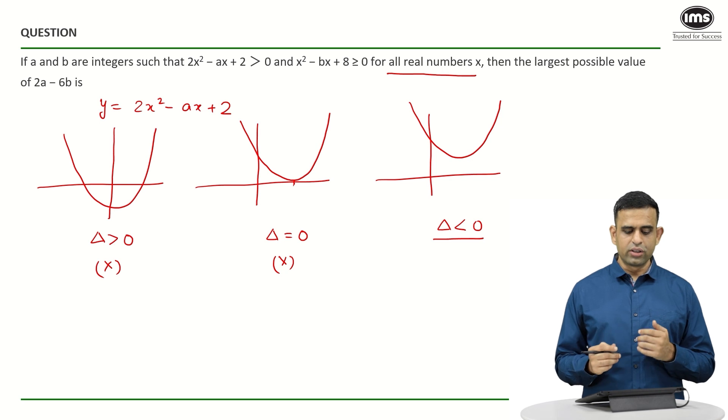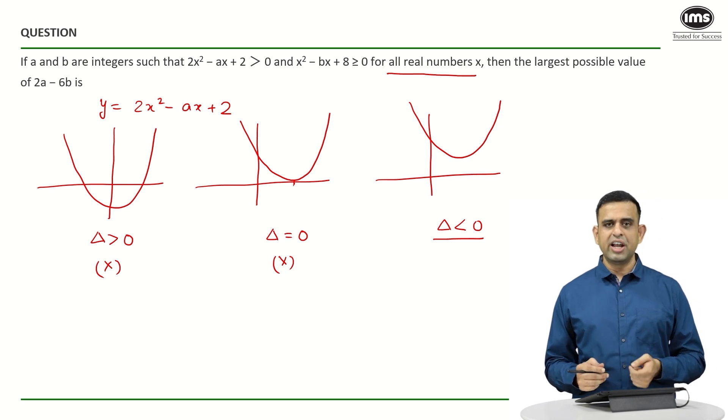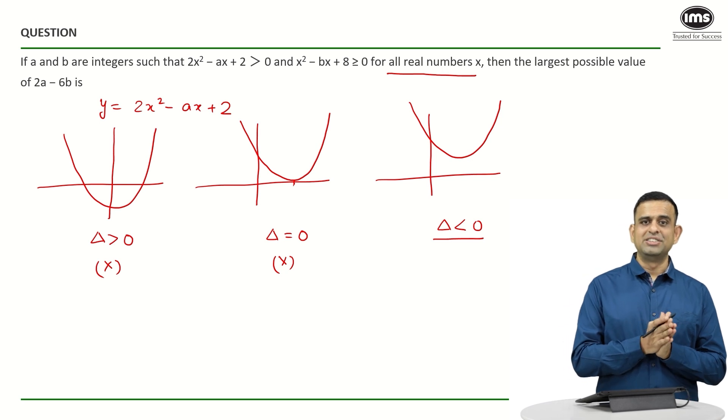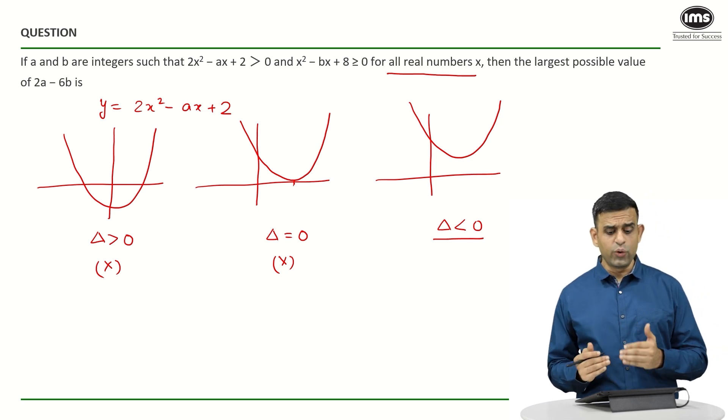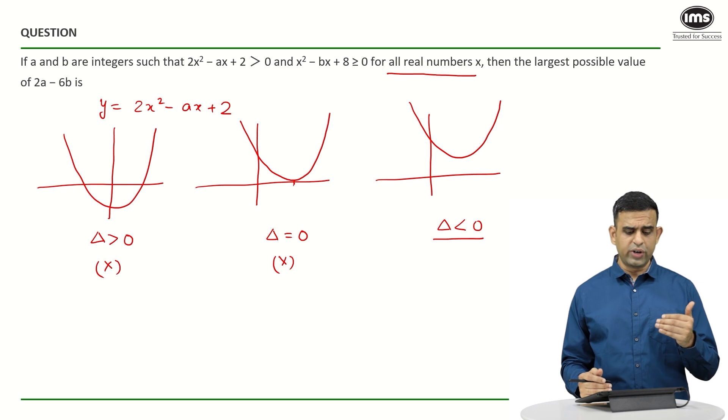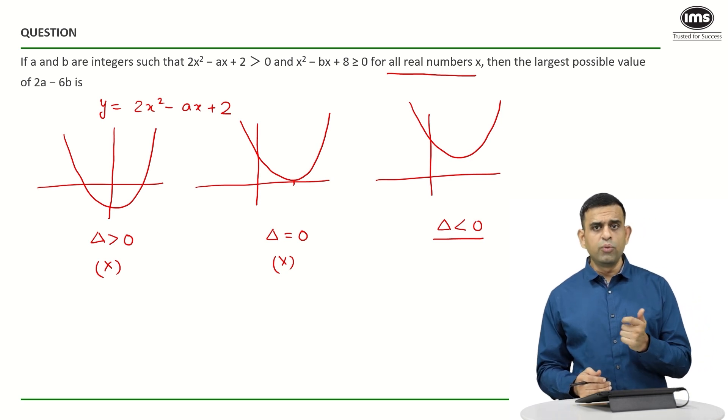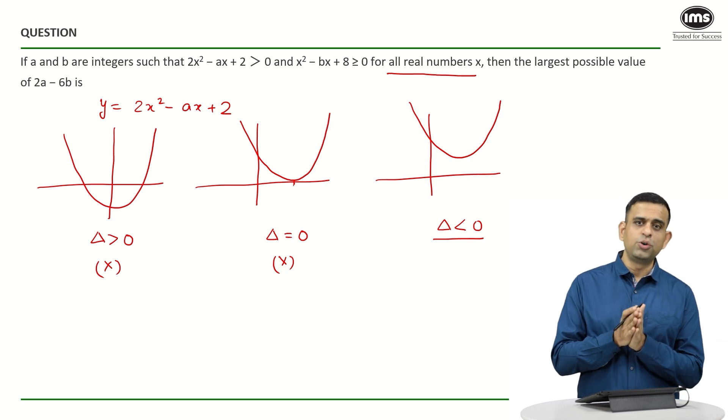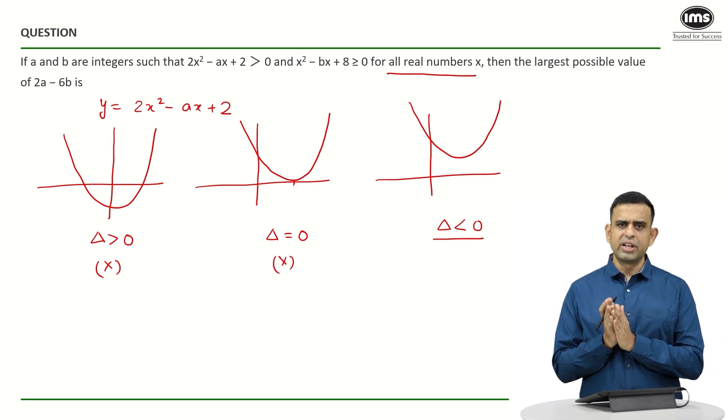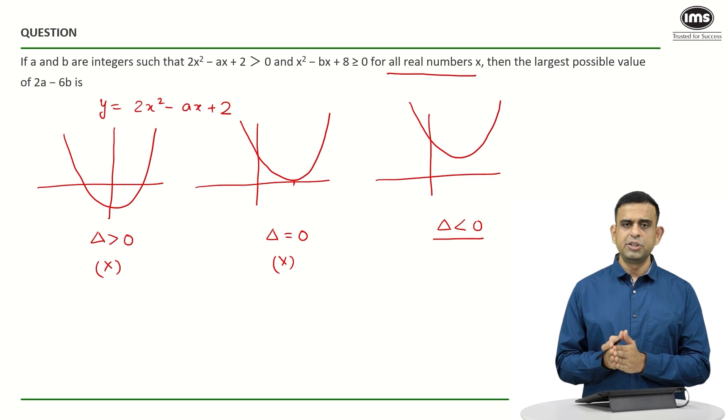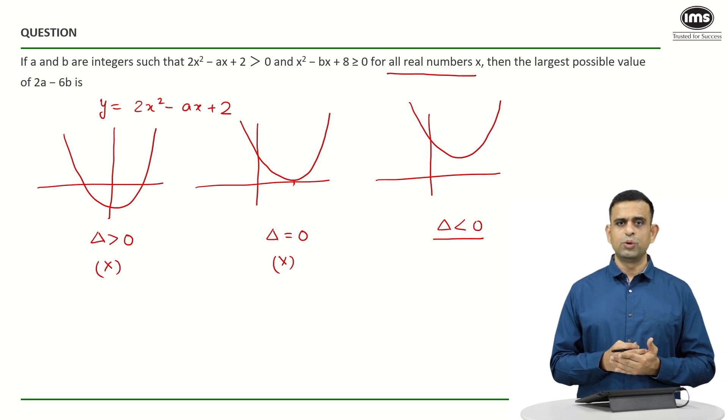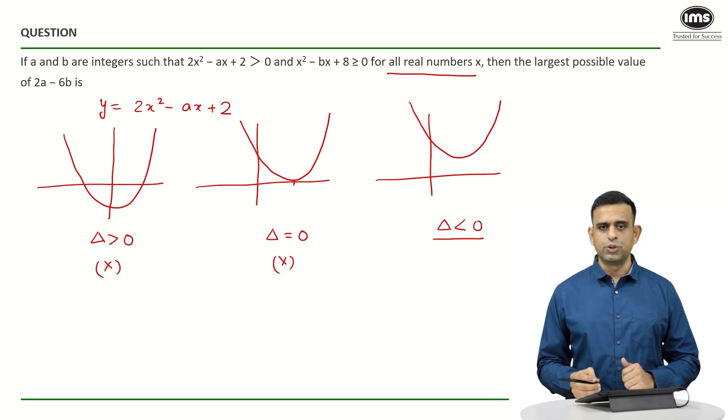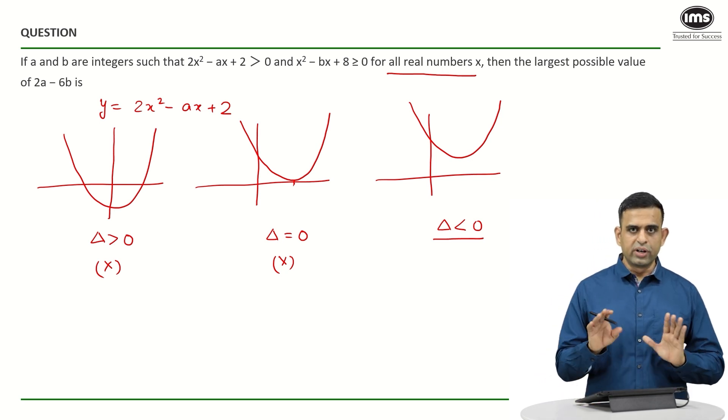So in other words, if I want the term 2x² - ax + 2 to be positive, your condition has to be the discriminant has to be less than 0. Then if I look at the second inequality, if I want x² - bx + 8 to be more than equals to 0, which will mean that I want the value of y to be either 0 or positive, one can say my delta has to be less than 0 or equals to 0 possibly. It can't be the first case, it can be either the second case or the third case over here.